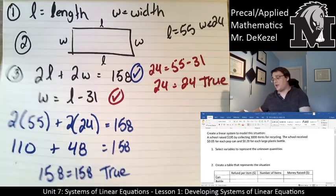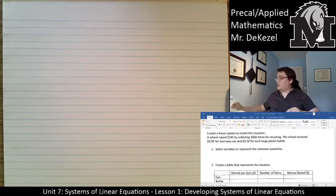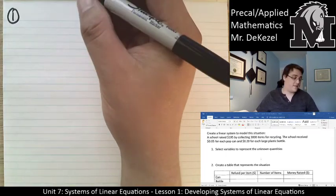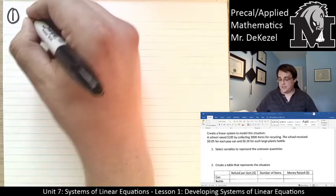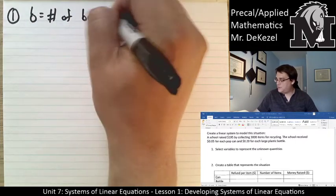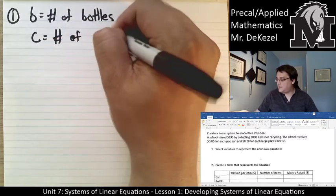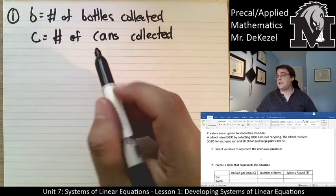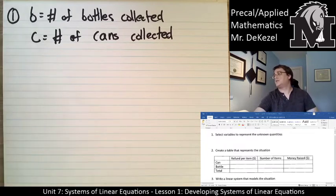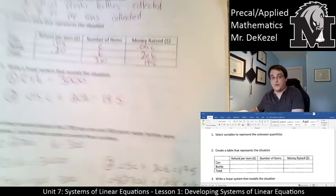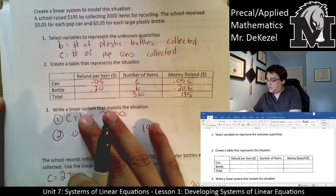Next problem: create a linear system to model this situation. A school raised $195 by collecting 3,000 items for recycling. The school received 5 cents for each pop can and 20 cents for each large plastic bottle. Selecting variables is always the first step. We say B equals the number of bottles collected and C equals the number of cans collected. I'll put a table on the screen to help represent the situation.